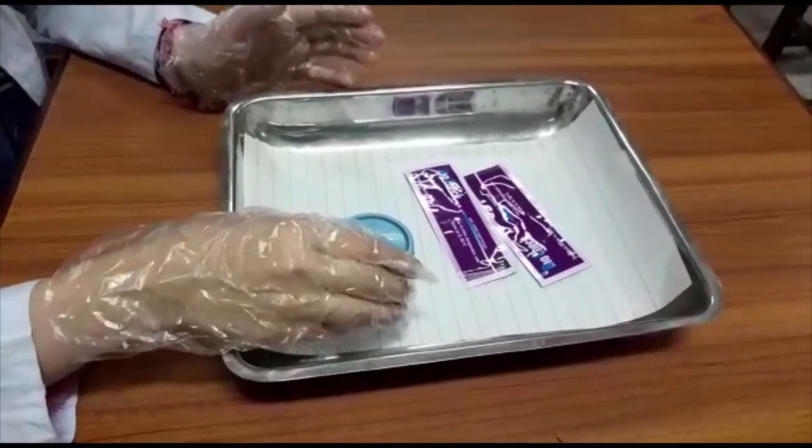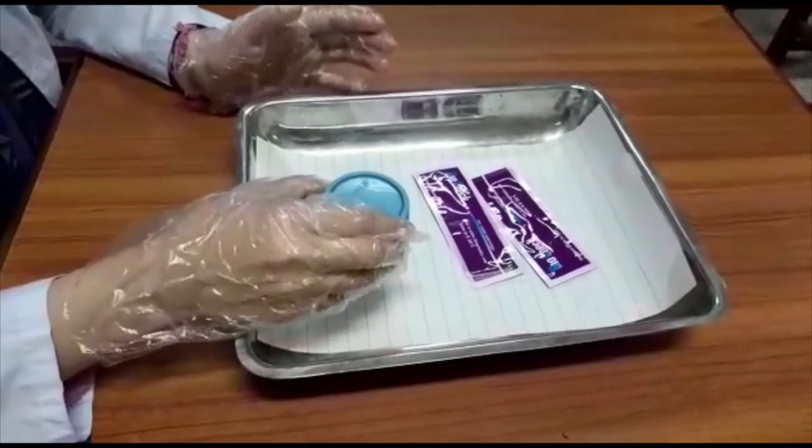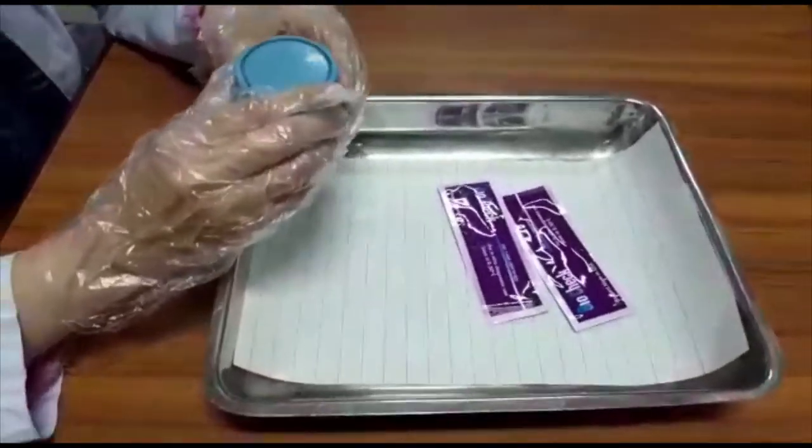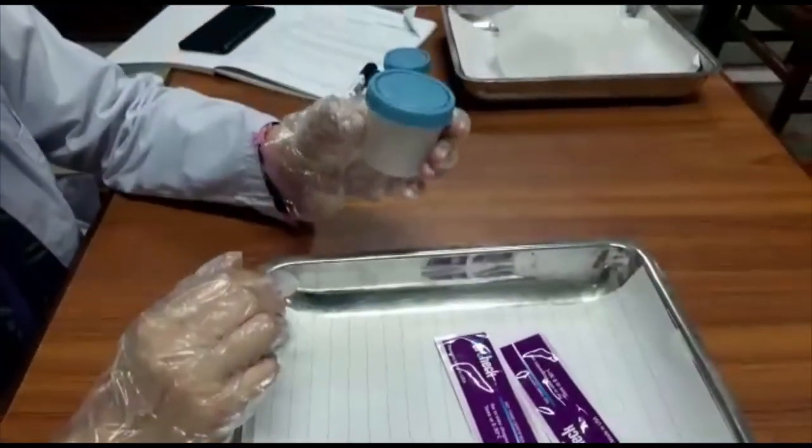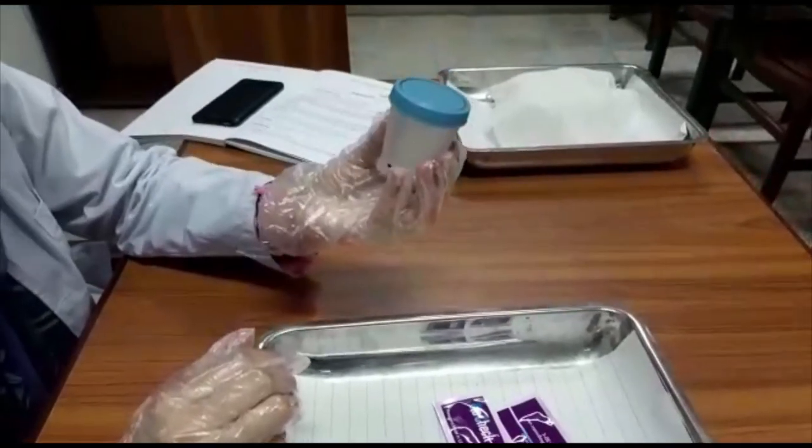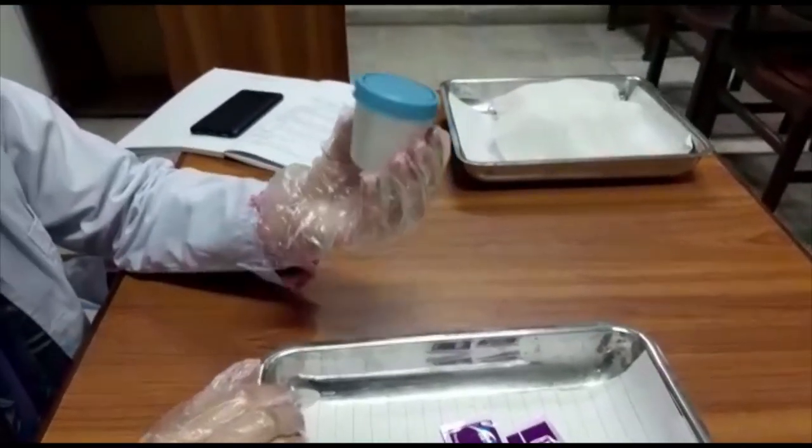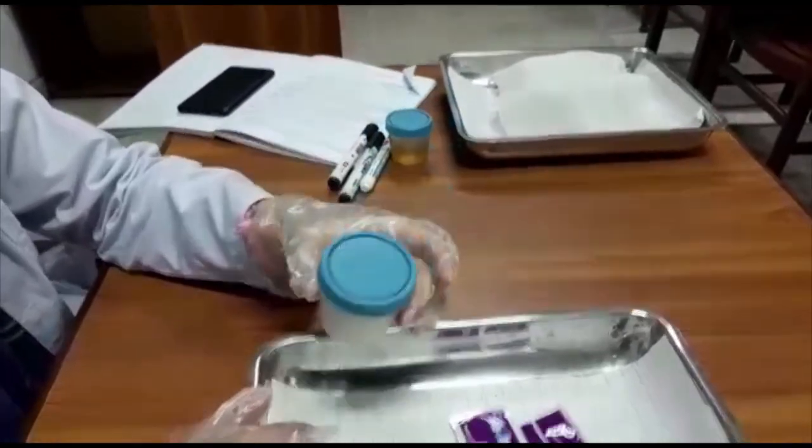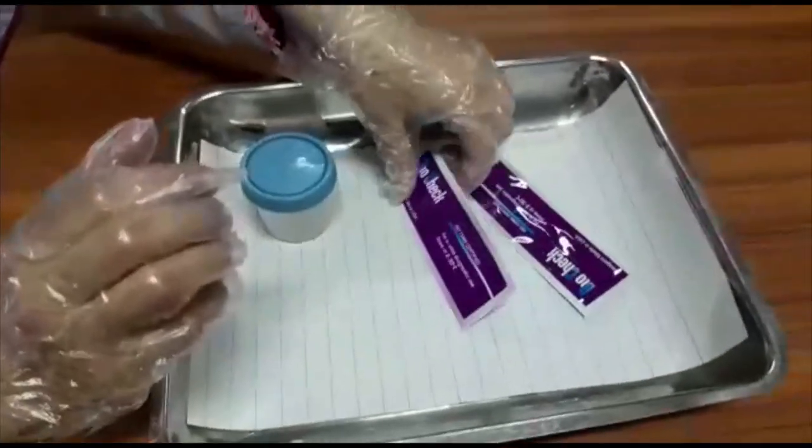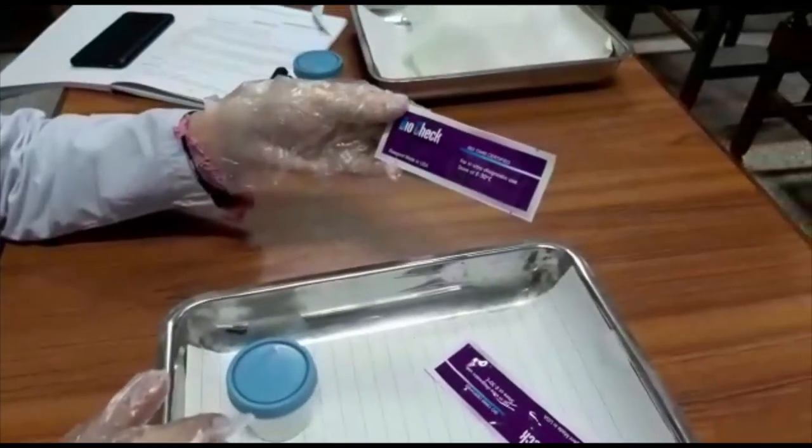Now we are going to perform our pregnancy test. For this experiment, what we need is a sterile container which should be clean for the collection of urine sample and pregnancy strips.